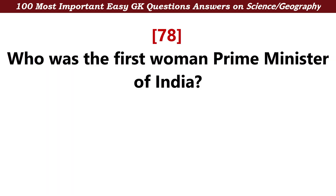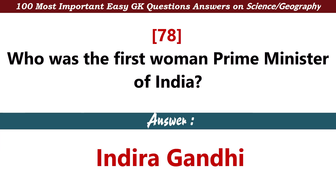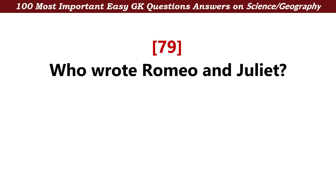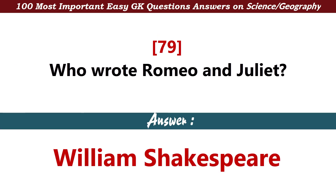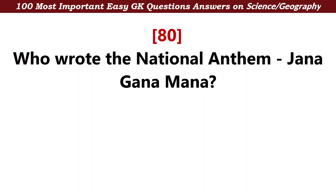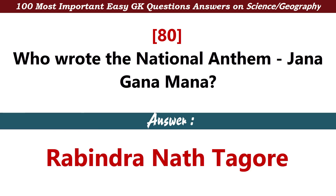Who was the first woman Prime Minister of India? Answer: Indira Gandhi. Who wrote Romeo and Juliet? Answer: William Shakespeare. Who wrote the national anthem Jana Gana Mana? Answer: Rabindranath Tagore.